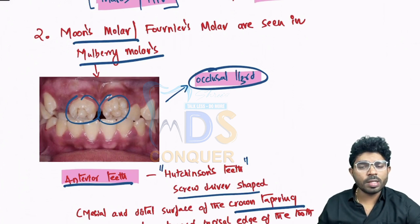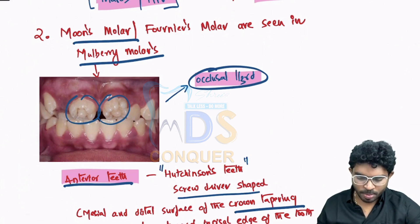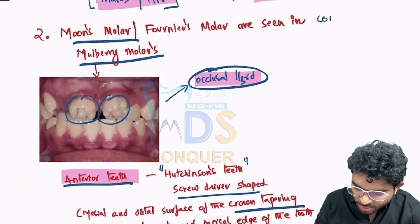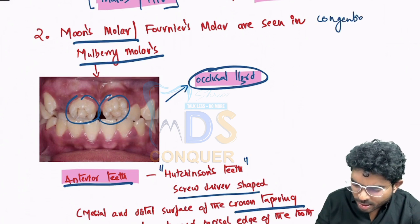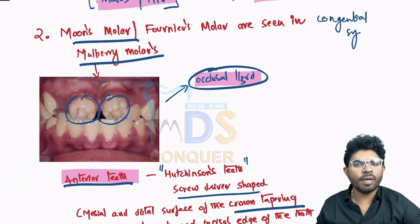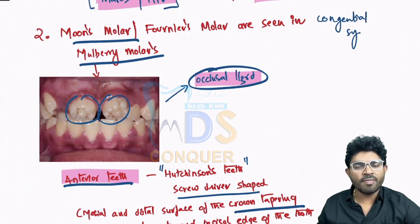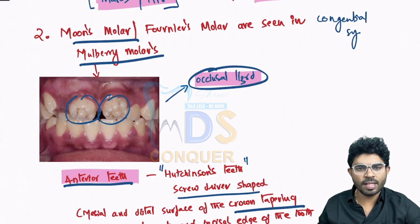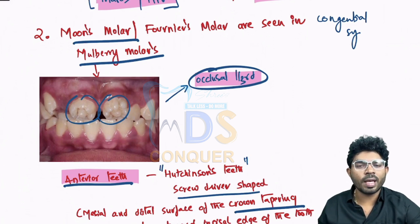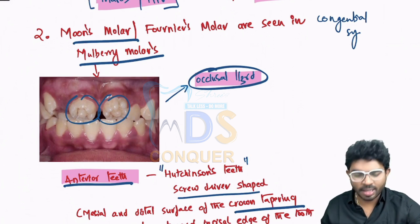The next question: Moon's molars, also called mulberry molars or Fournier's molars, are commonly seen in which infection? The answer is congenital syphilis. Syphilis is basically divided into primary, secondary, tertiary, and congenital syphilis. These molars are most commonly seen in congenital syphilis. Please answer in the comment box: what is Hutchinson triad?